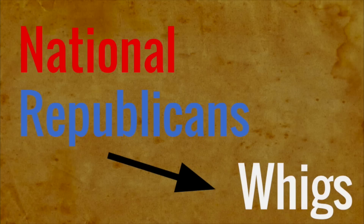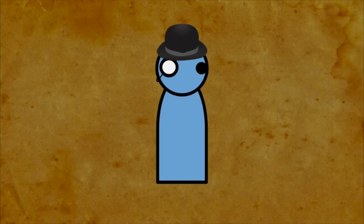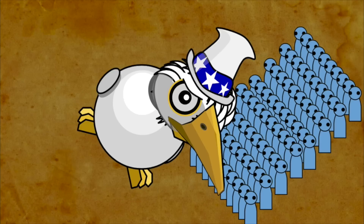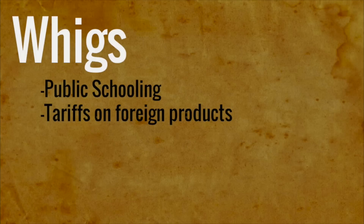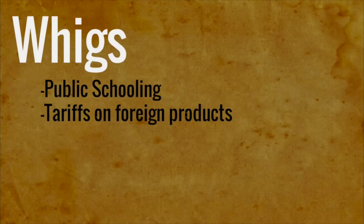The Whig Party was a continuation of the National Republican Party in many ways. It appealed to more skilled laborers and businessmen. Its intent was to make the federal government stronger, and by doing so supported new concepts that would help America improve various infrastructure elements commonplace today — public schooling, tariffs to protect American businesses, and distaste for the treatment of Native Americans by the Jackson administration were all core to the Whig platform.